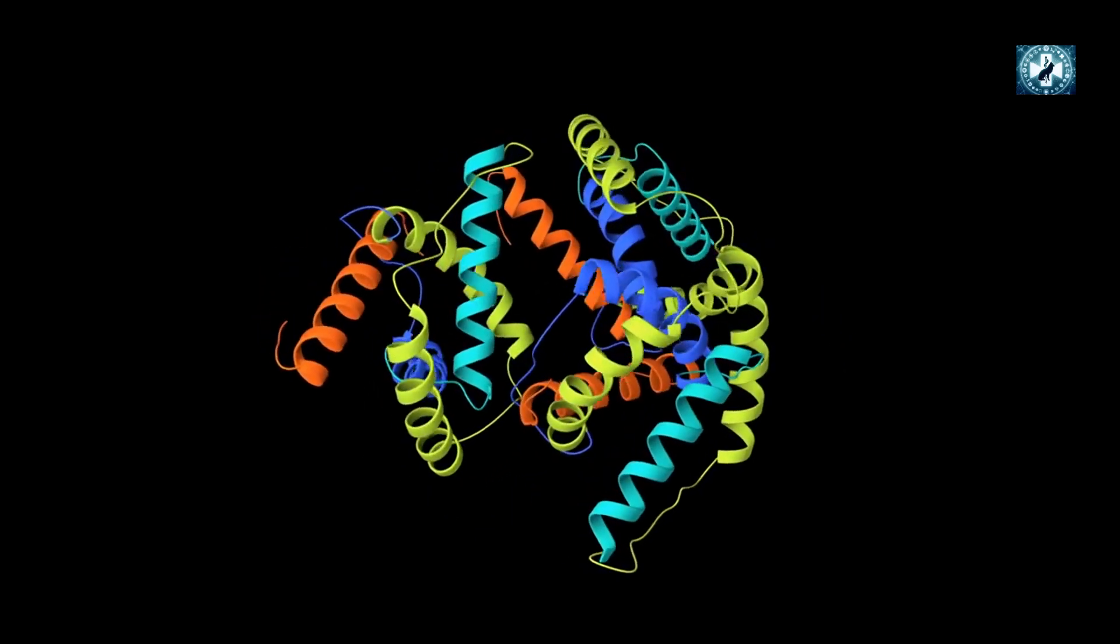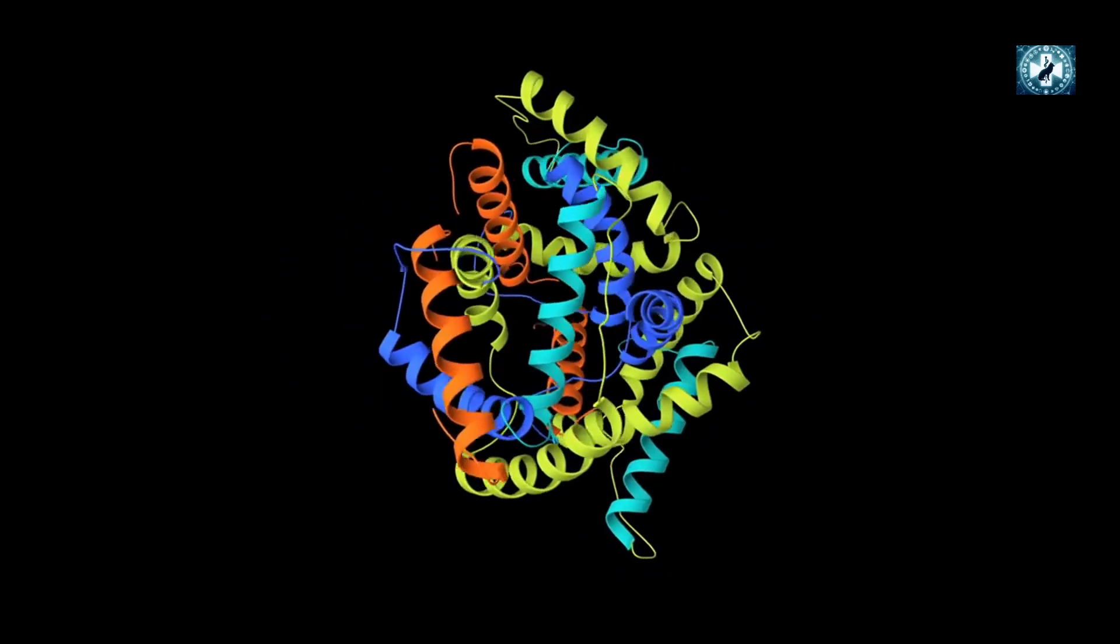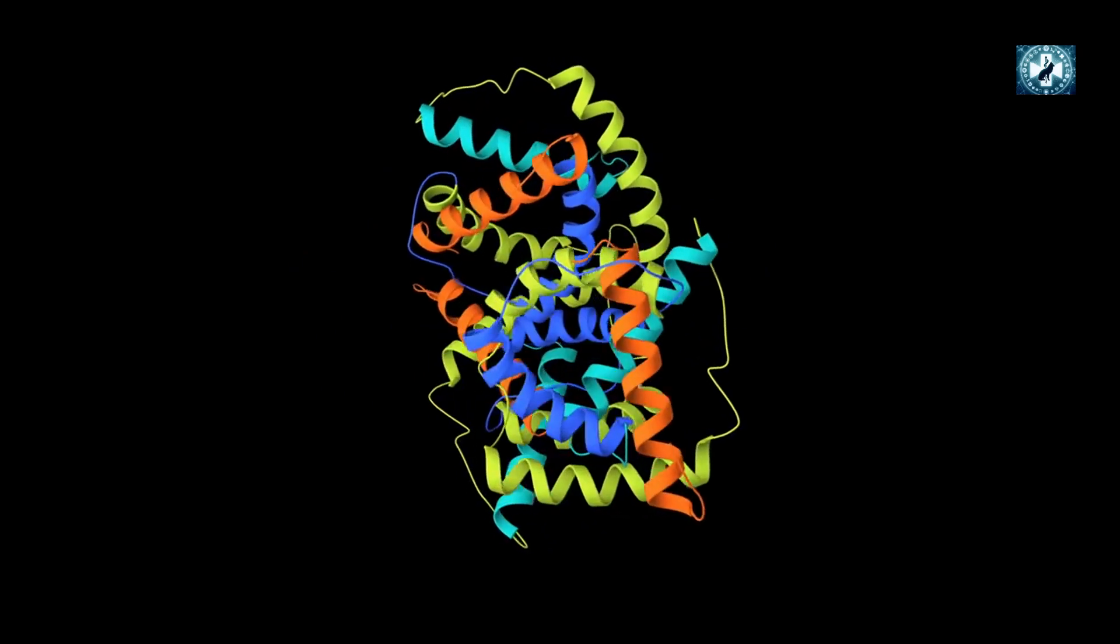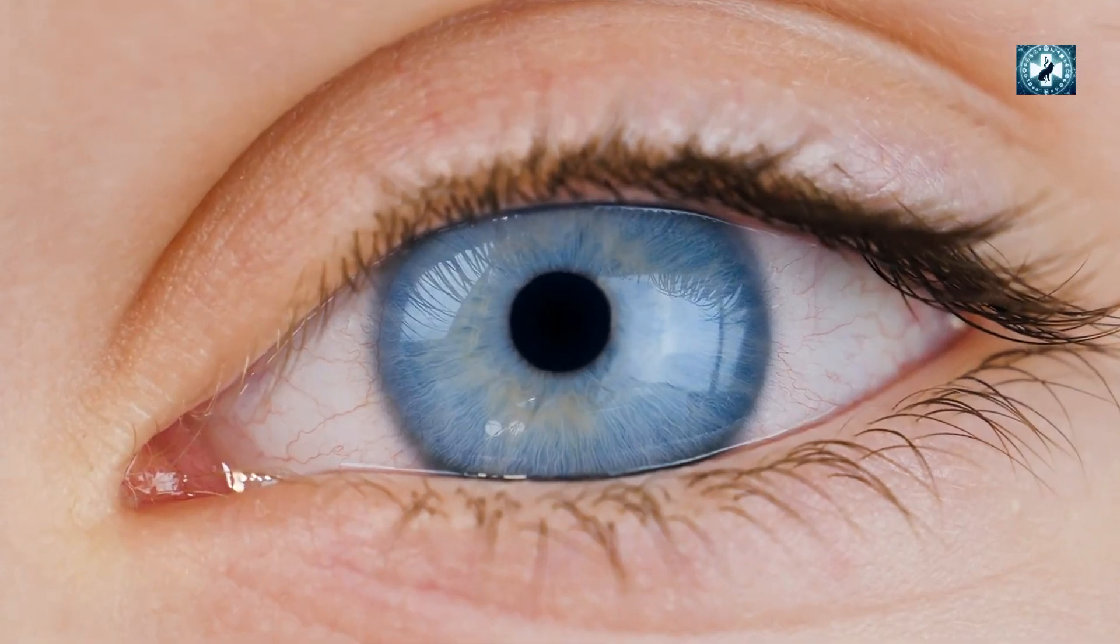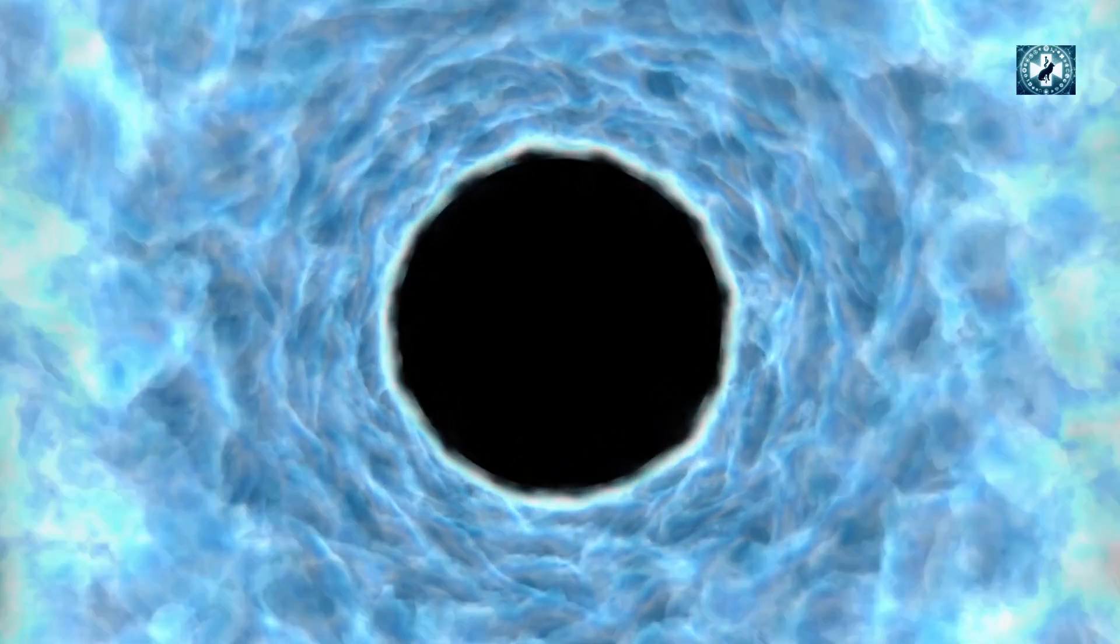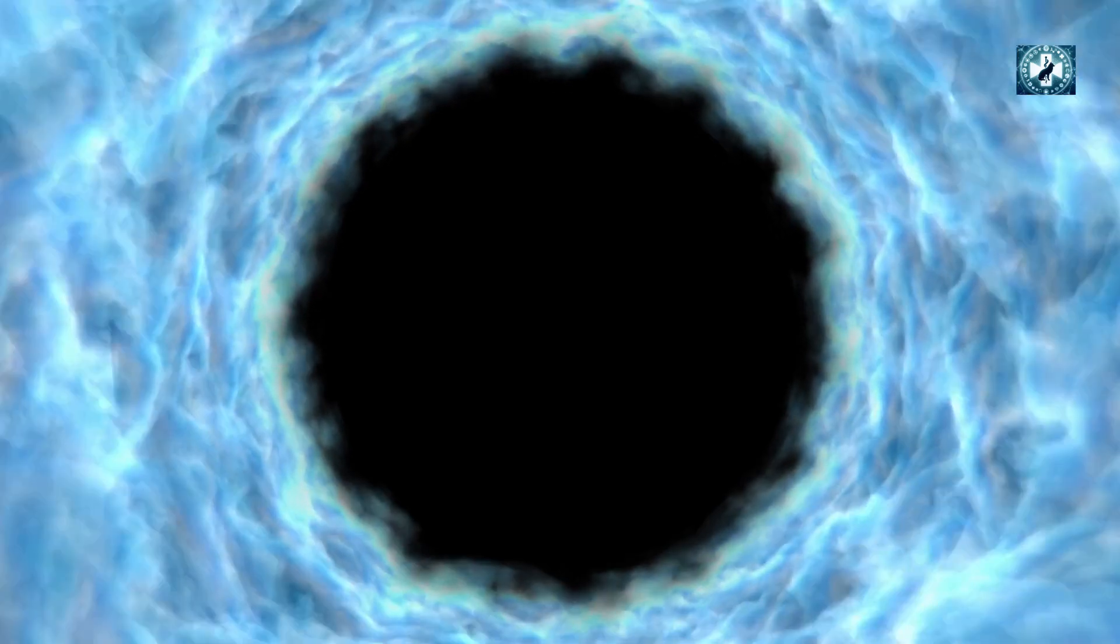Here, NAC acts as a scavenger of free radicals, neutralizing these harmful molecules before they can cause further damage to the lens proteins. This process helps in maintaining the transparency of the lens and potentially reversing the opacity caused by cataracts.